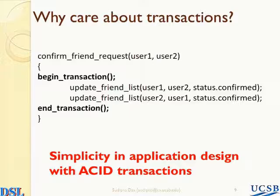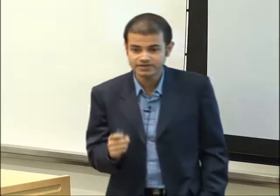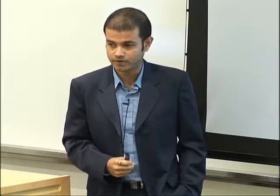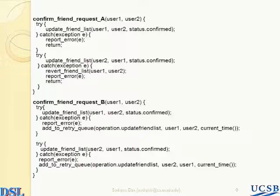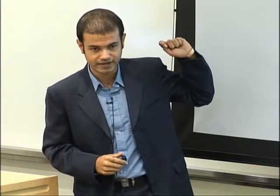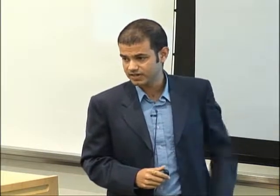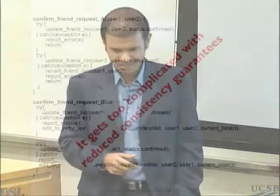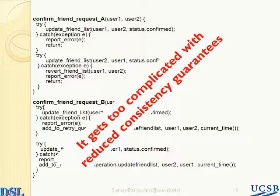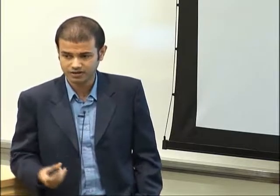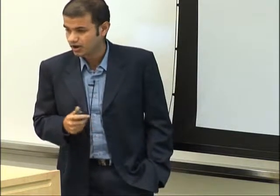If you were in a world where the database system supported transactions, this is the code you would write as the application developer. The key idea here is the simplicity, and this is one of the main reasons why databases have been so popular over the last two or three decades. On the other hand, if you were writing it on a key-value store with limited guarantees, you'd end up writing far more complex code. Don't even bother reading it, because there are a lot of corner cases that have been left out, and this is what the application developer re-implements for every application they write. In summary, it gets too complicated, and makes life of the application developer harder.